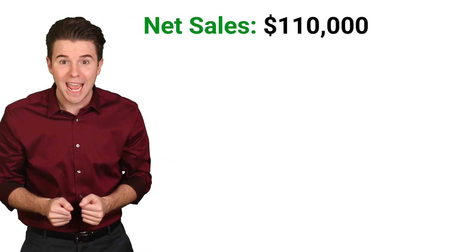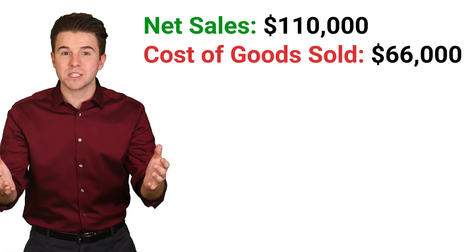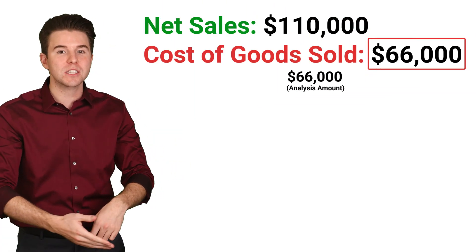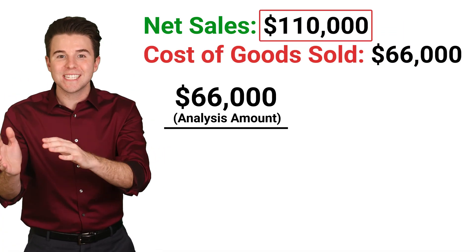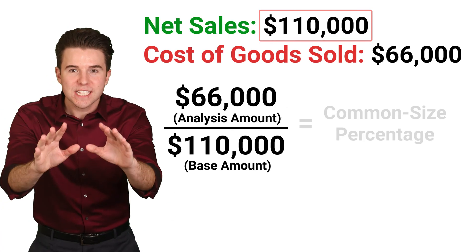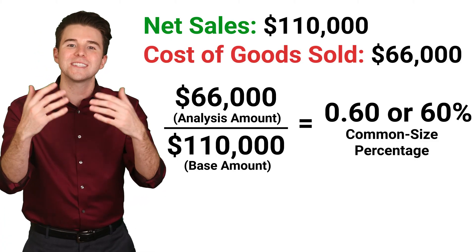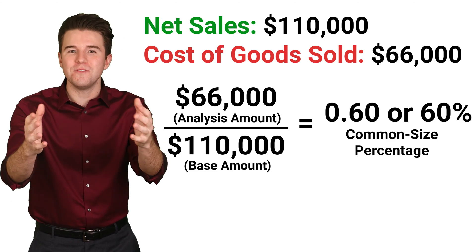We can also apply vertical or common size analysis to the income statement. For example, assume a company reports net sales of $110,000 and cost of goods sold of $66,000. To compute the common size percentage for cost of goods sold, we take the analysis amount, which is cost of goods sold of $66,000, and divide it by the base amount, which is net sales of $110,000. This gets us a common size percentage of 0.60 or 60%, meaning cost of goods sold is 60% of net sales.